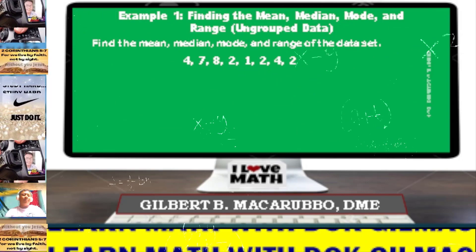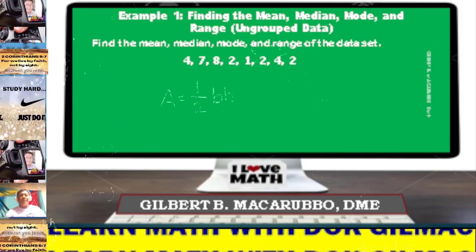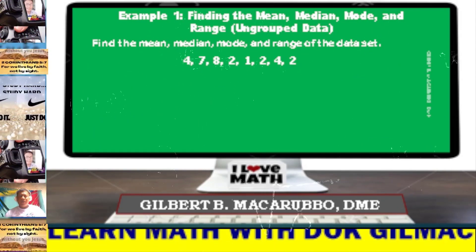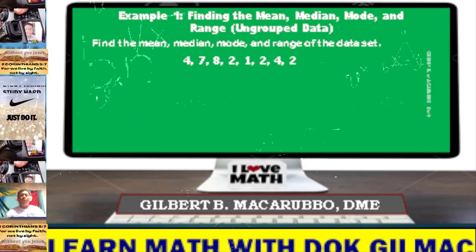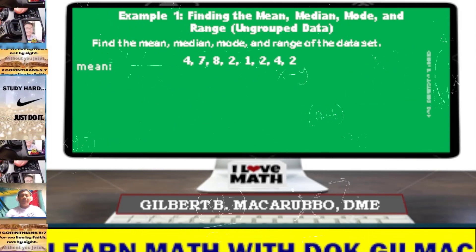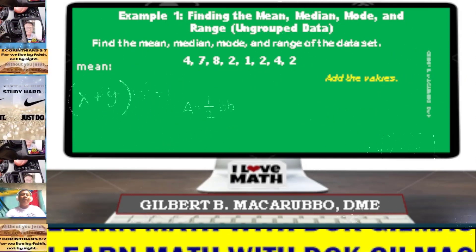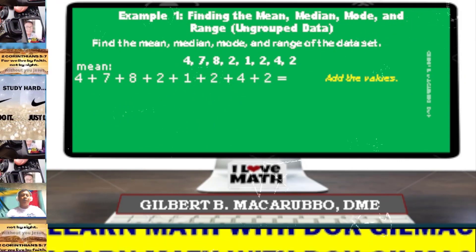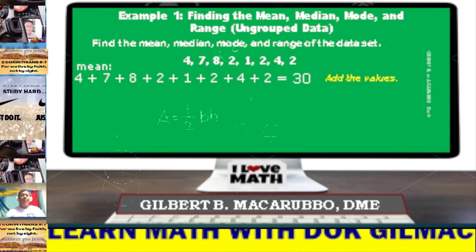Consider example number 1: finding the mean, median, mode, and range for ungrouped data. We have the set of data: 4, 7, 8, 2, 1, 2, 4, and 2. Let's determine first the mean. Add the given values: 4 plus 7 plus 8 plus 2 plus 1 plus 2 plus 4 plus 2 is simply equal to 30.